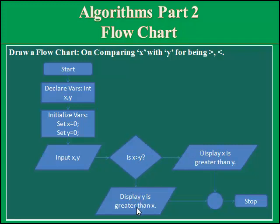Now the chart has made the concept clear. Start, declare variables integer type, initialize variables, set X equals to 0, Y equals to 0, input X. Is X greater than Y? Yes, then display X is greater than Y. If X is not greater than Y, then it's the reverse condition, then display Y is greater than X. Both processes are terminating here and then stop will appear.